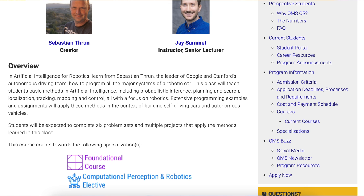According to the course website, the goals of this class are to learn from Sebastian Thrun, who is the leader of Google and Stanford's autonomous driving team, how to program all the major systems of a robotic car, including basic methods in artificial intelligence, including probabilistic inference, planning and search, localization, tracking, mapping and control, all with a focus on robotics. With that being said, I have no real interest in robotics at all, and I only took this class to get a little AI warm-up and to see what the programming assignments would be like in an online program.